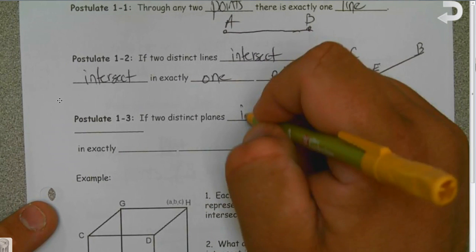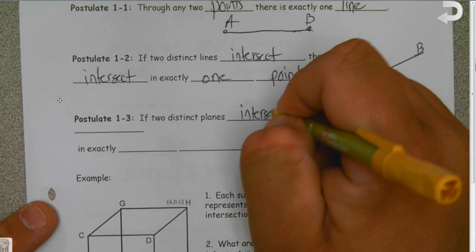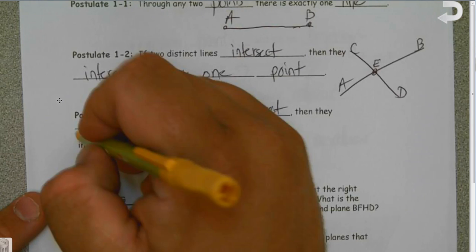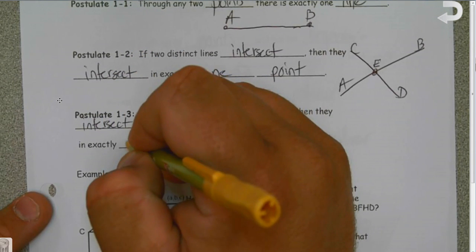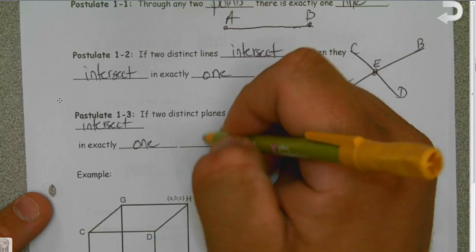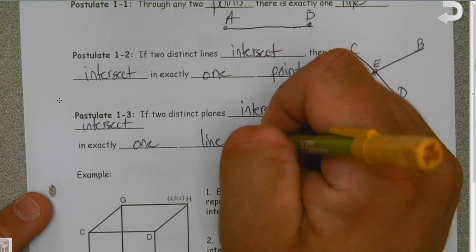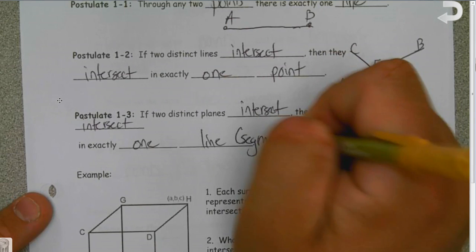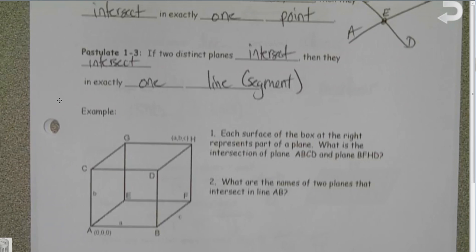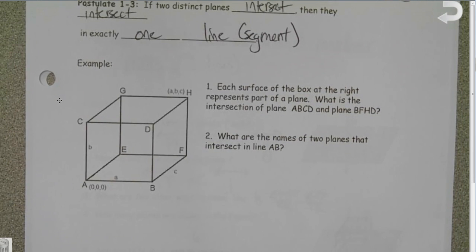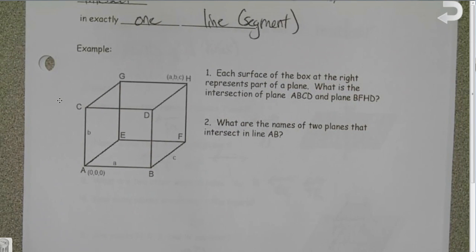If two distinct planes intersect, then they intersect in exactly one line, or we can say one line segment, whichever way you want to do it.